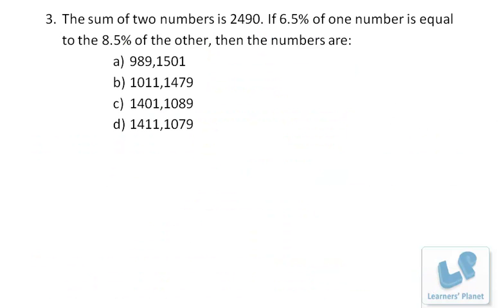Now this is a very simple problem. The sum of two numbers is 2490. If 6.5% of one number is equal to 8.5% of the other, the numbers are - suppose 6.5% of x is 8.5% of y.